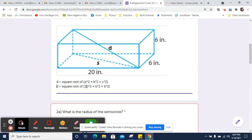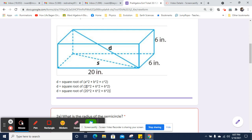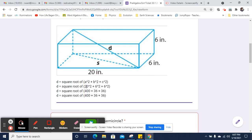So 6 squared is 36, and 6 squared is also 36, and 20 squared is going to be 400. And now we're going to add all that together. So d is going to be the square root. That's going to be 36 plus 36 is 72, and then that plus 400 is 472.